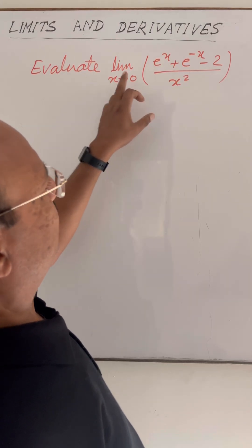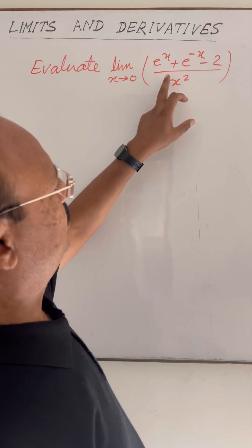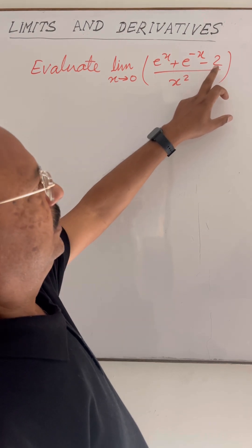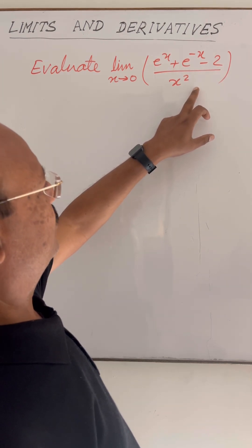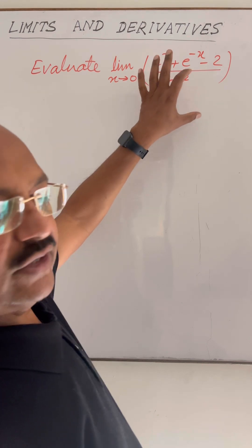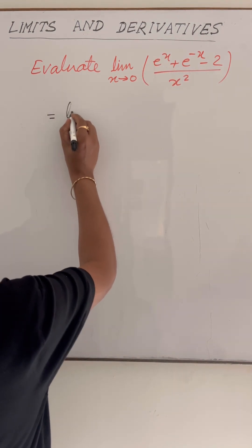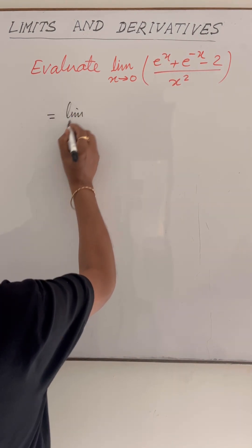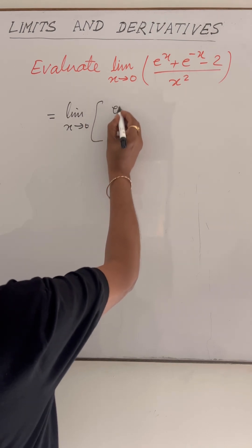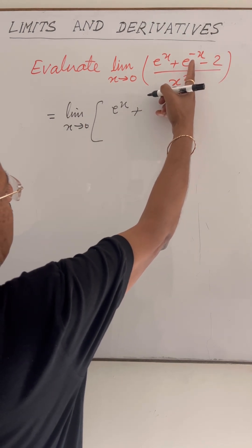The question is: evaluate the limit of the function (e to the power x plus e to the power minus x minus 2) upon x squared, when x tends to 0. Very important question. So this can be written as limit x tends to 0, e to the power x plus e to the power minus x.